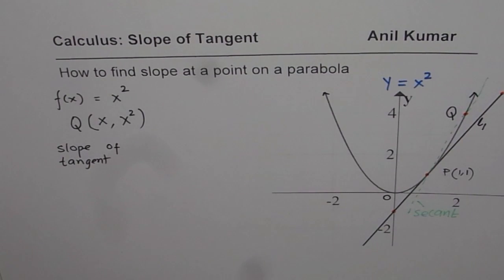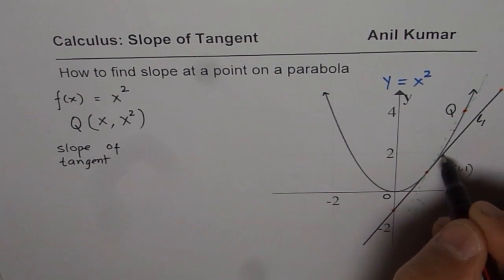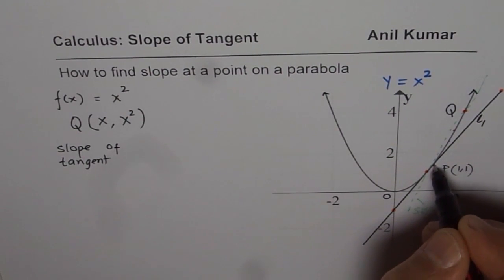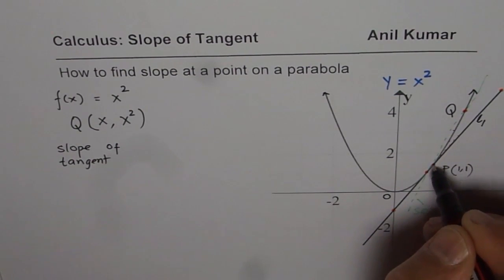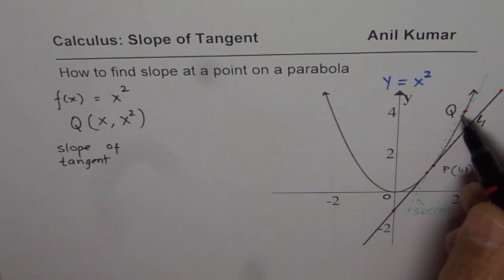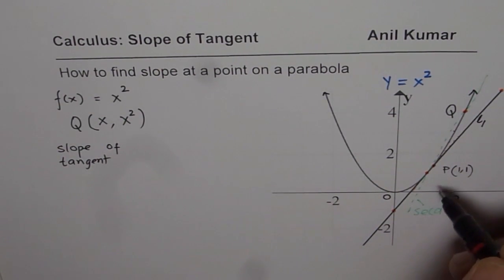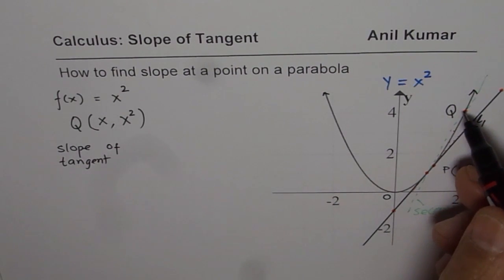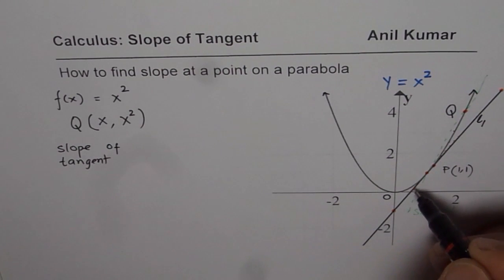Bringing the point Q closer and closer to P, let us say very, very close. And then joining this point, we'll get a line which is very close to our tangent. Bringing this point Q very close to P makes this secant closer and closer to the tangent.